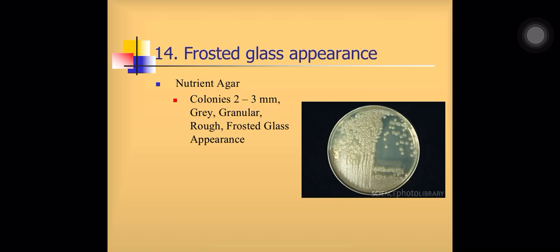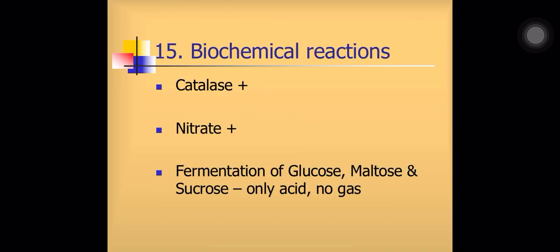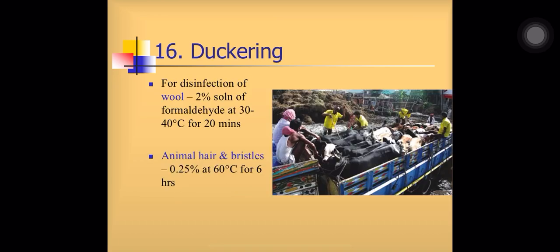Frosted glass appearance: the colony of Bacillus anthracis on nutrient agar looks like frosted glass — the colonies are grey, granular, rough, and look like frosted glass. Biochemical properties: catalase and nitrate positive, fermenting various sugars.